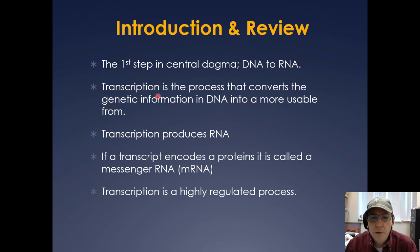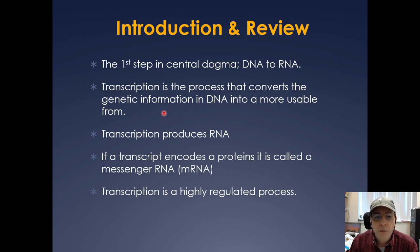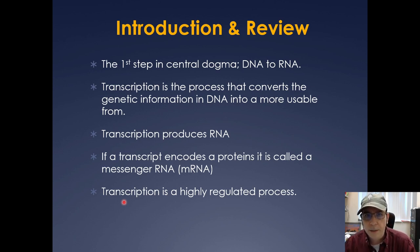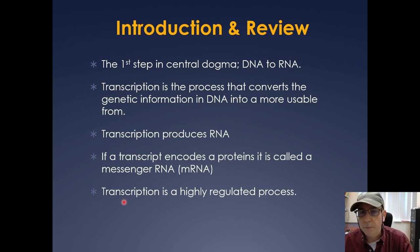What transcription is really doing is taking all of the genetic information in DNA and converting it into a more usable form. Transcription produces RNA. If the transcript encodes a protein, it's called a messenger RNA. There are many different kinds of RNAs, and what we're going to focus mostly on today are the messenger RNAs. Transcription in general is a highly regulated process, and in the second third of this course we're going to be covering a lot on transcriptional regulation, so everything we cover today you'll need when we build on that in a couple weeks.